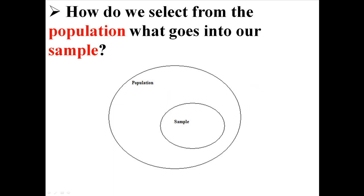So far I've talked to you about populations and samples. Now we're going to talk about how we choose what goes into our samples. That is the question: how do we select from the population what goes into our sample?